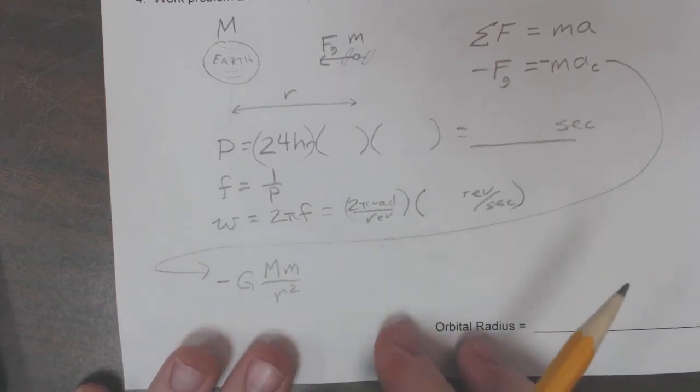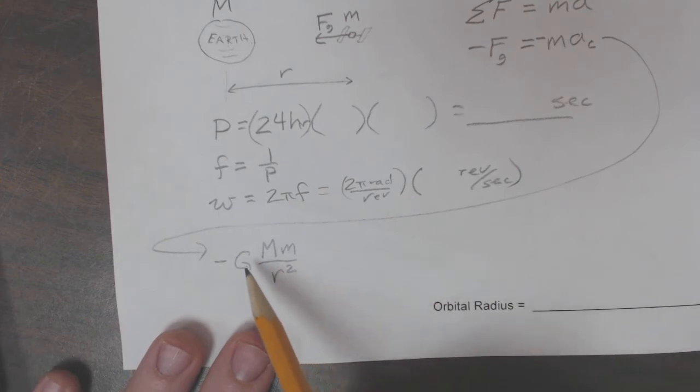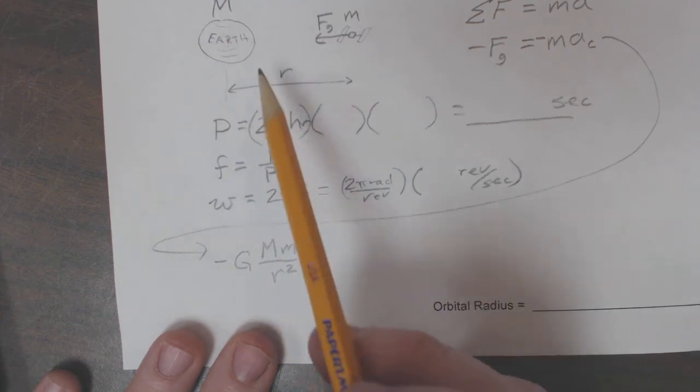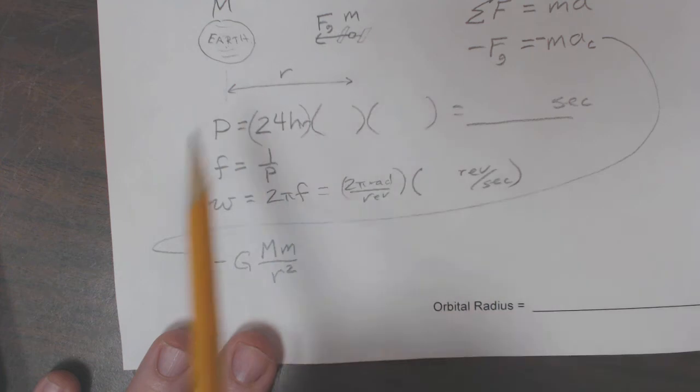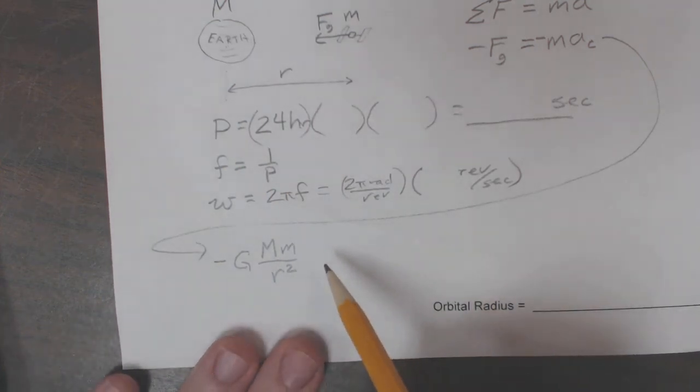This is called the inverse square law of gravity. Universal gravitational constant, mass of the Earth, mass of the satellite, distance between their centers of mass, centers of masses from there to the center of the satellite. So the shape of the satellite doesn't really matter for this approximation that we're doing here.